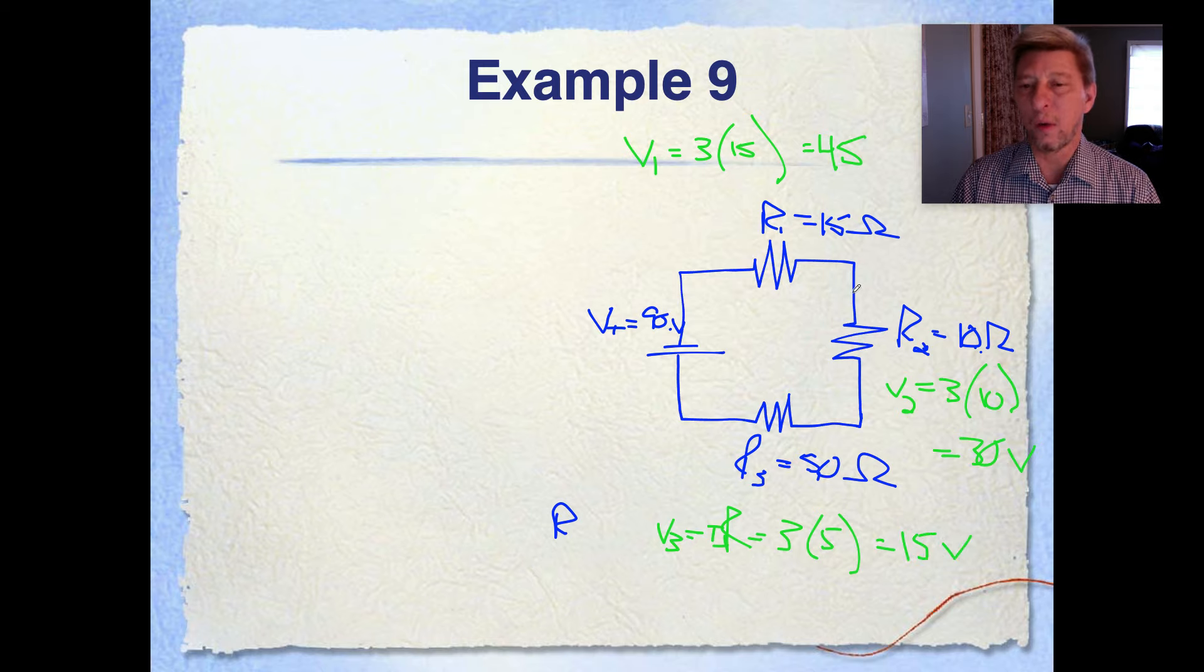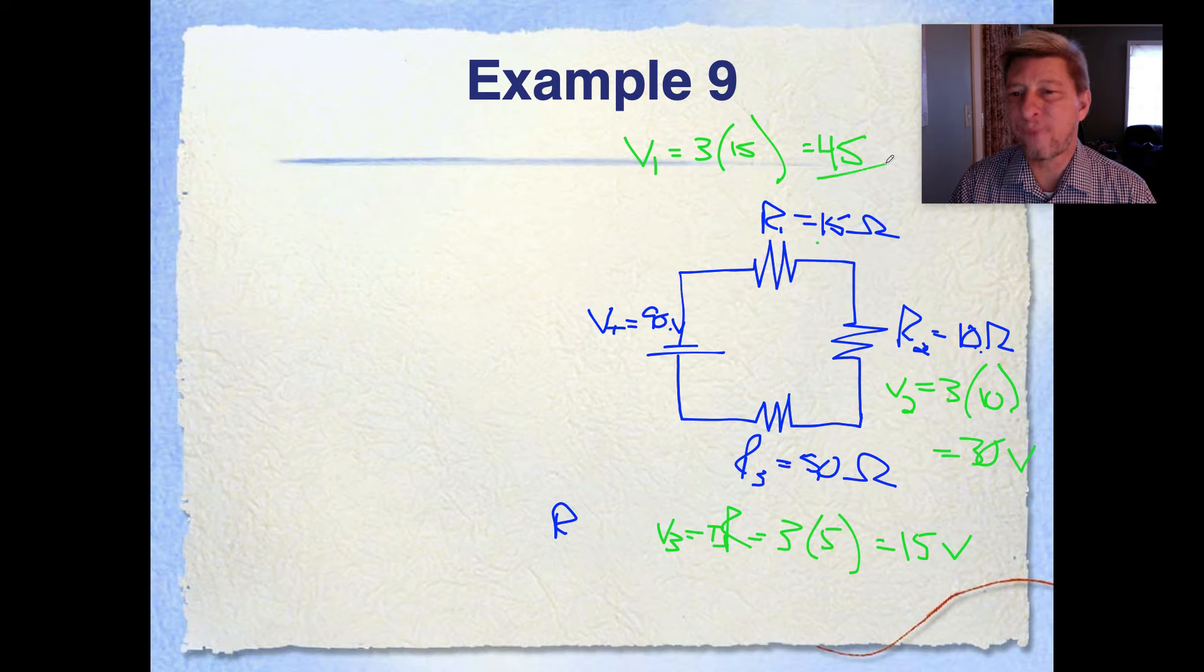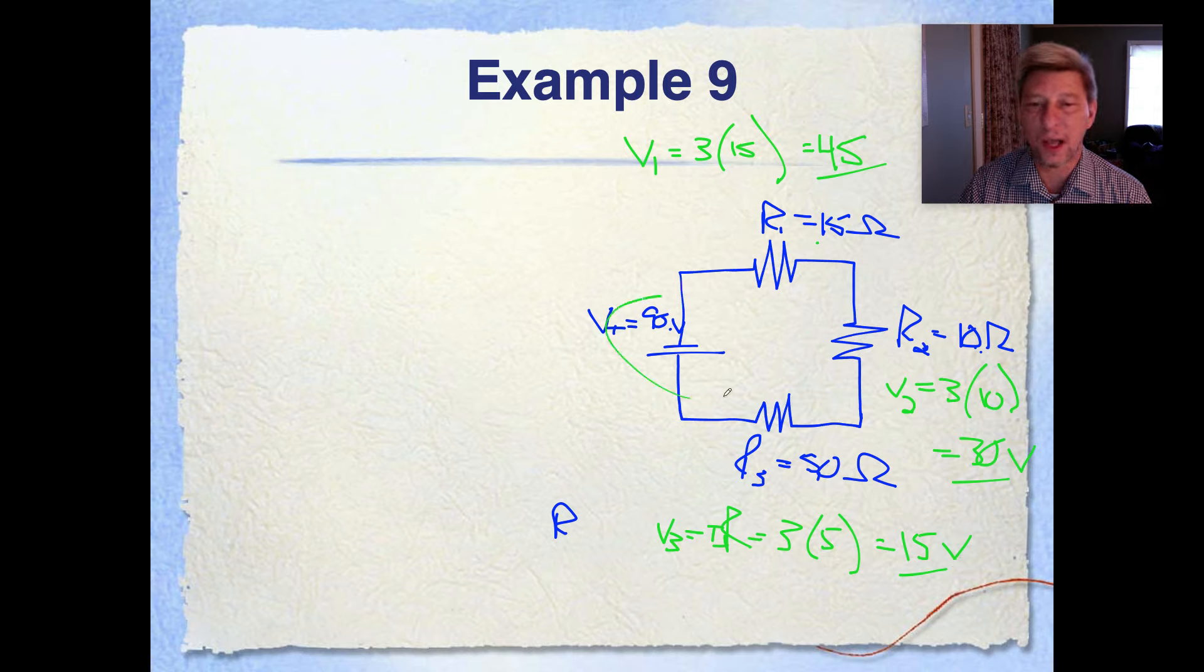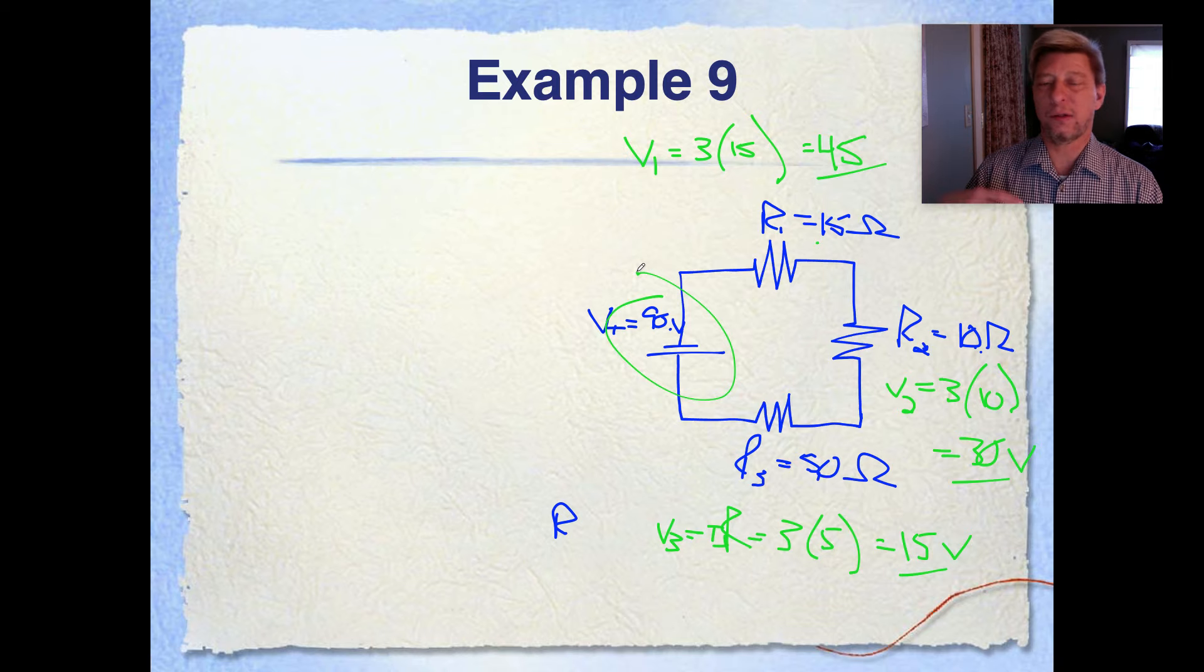Now, what do you notice here? Well, 45 plus 30 is 75 plus another 15 is 90 volts. So what that means is that all of the potential energy has traveled through this circuit and been lost in the circuit.